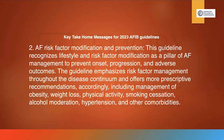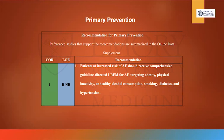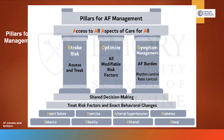The next key take-home point from the new guidelines involves risk factor modification and prevention. The guidelines focus on a pillar that addresses risk factor modification, stroke risk, rate control versus rhythm control, optimizing modifiable risk factors, and symptom management. As a Class 1 indication, patients at increased risk of AFib should receive comprehensive guideline-directed lifestyle and risk factor modification targeting obesity, physical inactivity, unhealthy alcohol consumption, smoking, diabetes, and hypertension.